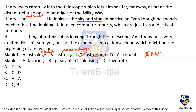With the first blank as C, we now limit the answer to options B and D. Coming to the second blank: 'His blank thing about his job is looking through the telescope.' What kind of word fits here? 'Favoring thing' — do we even say 'favoring thing'? No.